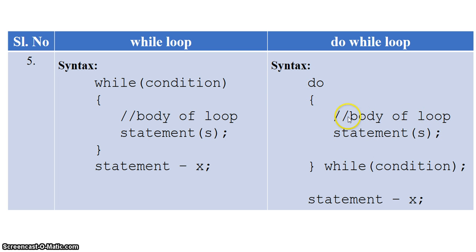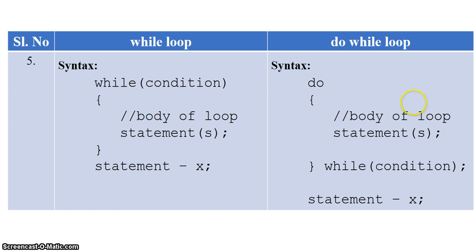Coming to the syntax of do-while loop: the statements within the body of the loop are executed first, and then the condition is checked. As the condition is checked at the end, do-while is called exit control or post-test loop. If the condition is true, we enter the body of do-while again and execute all the statements present here, then check the condition again.